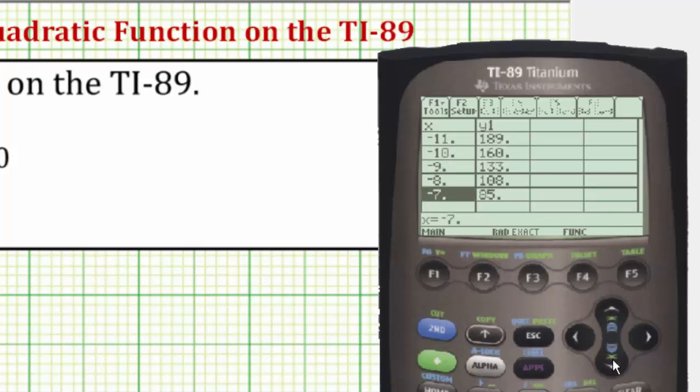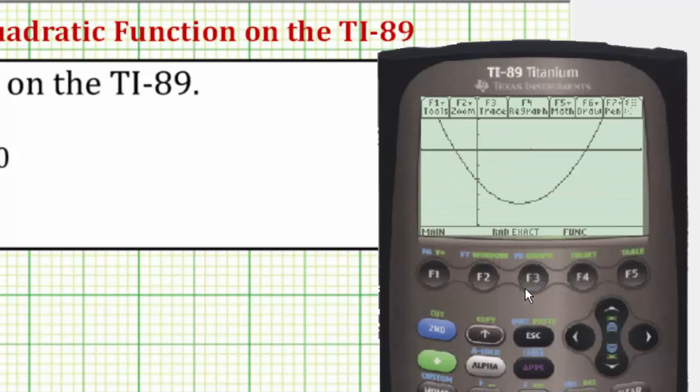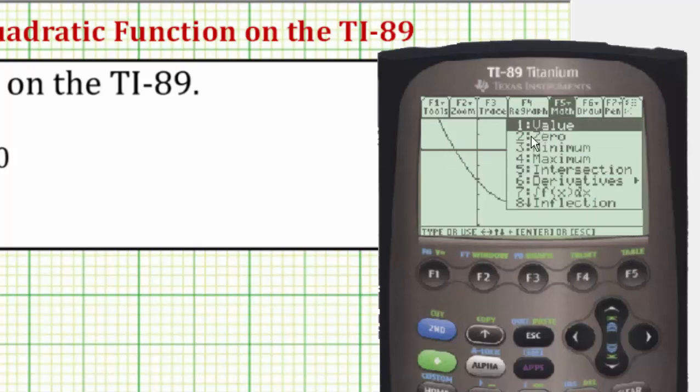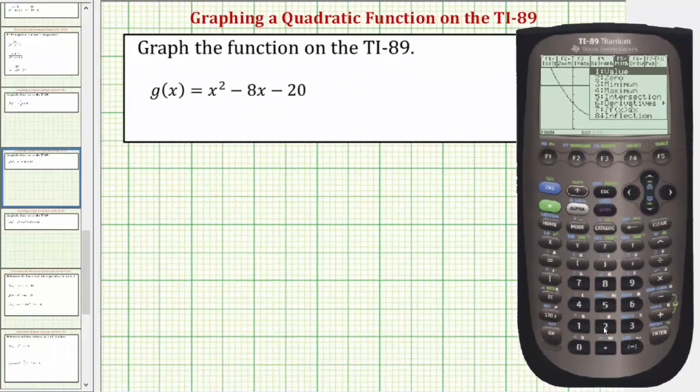Let's go back to the graph again by pressing diamond F3. Two other points you might want to find are where it crosses the horizontal or x axis, which would be this point and this point. Let's also calculate these on the calculator. So we'll press F5 again, and the intercepts are going to be the zeroes, so we'll press number two.